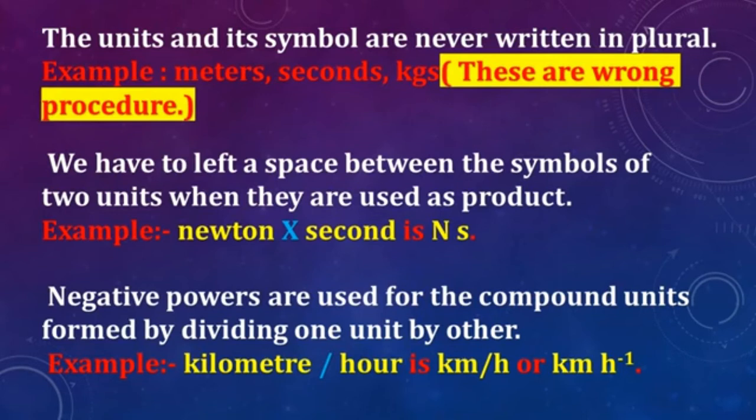Negative powers are used for compound units formed by dividing one unit by another. For example, kilometer per hour can be written as km/h or as km h to the power minus 1.